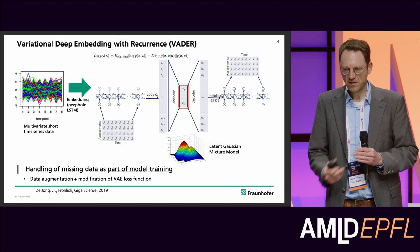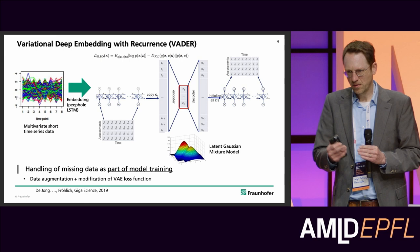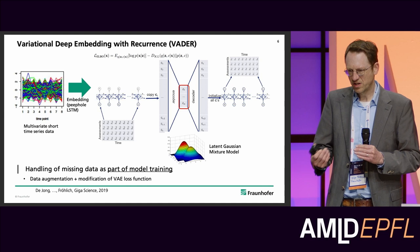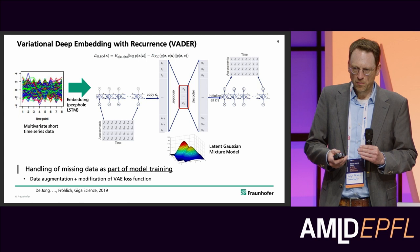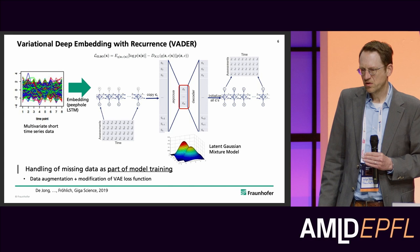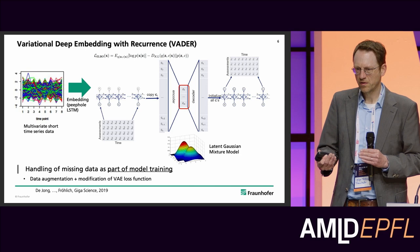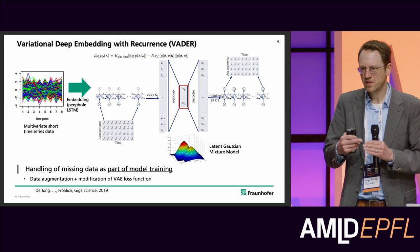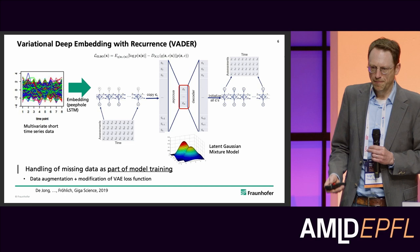The LSTM model leads to a hidden state variable that we concatenate over the different observed time points, then project to a lower dimensional space via an encoder, and likewise decode. One special aspect of VEDA is that, opposed to a classical variational autoencoder where the latent codes are assumed to follow one Gaussian distribution, here we have a mixture of Gaussians — a latent Gaussian mixture model.